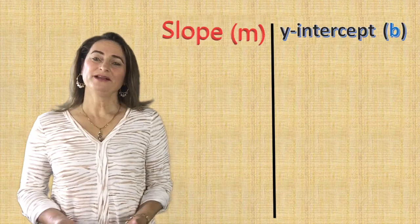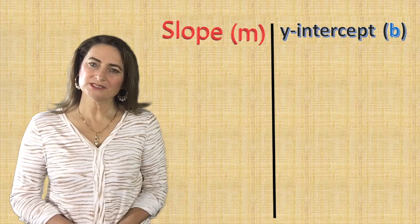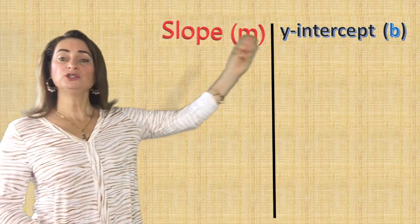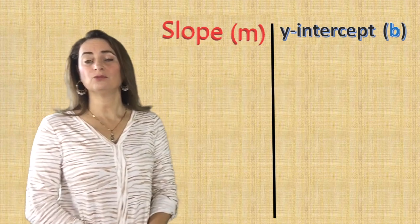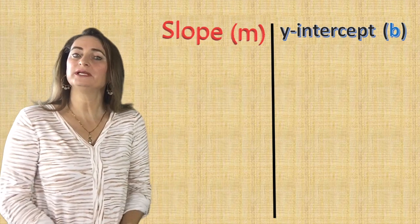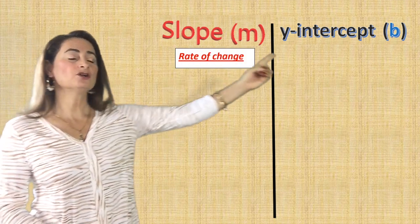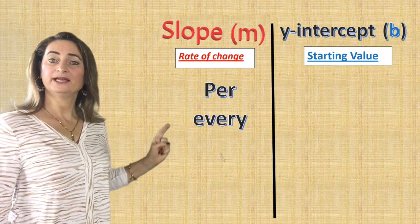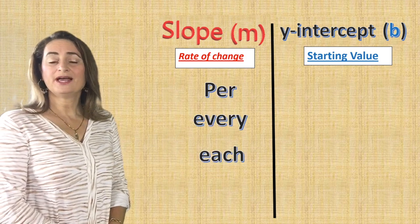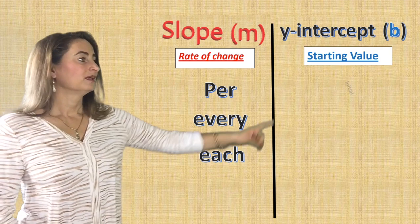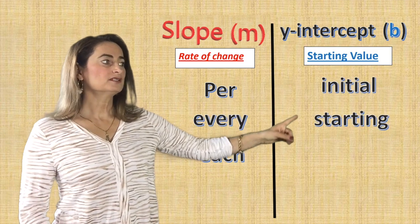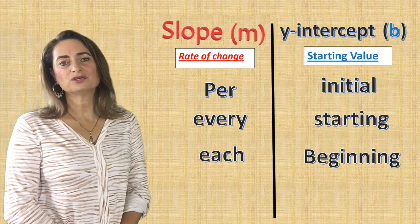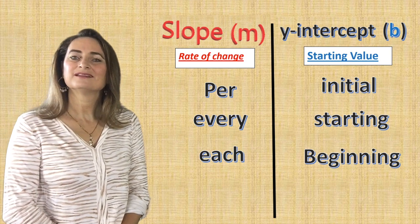Before we write equations in slope-intercept form from word problems, let's review which word indicates a slope and which indicates a y-intercept. The words 'per,' 'every,' and 'each' show a rate — so that is the slope. The words 'initial,' 'starting,' or 'beginning' show the starting value — so all these words indicate the y-intercept.